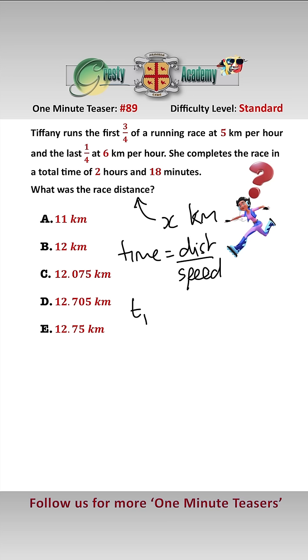So let's look at the first three quarters of the race and call that time T1. That equals 3x over 4 over her speed which was 5, and T2, which is the time taken to run the last quarter, is equal to x over 4 over her speed which was 6.